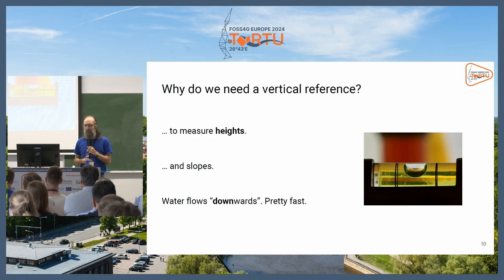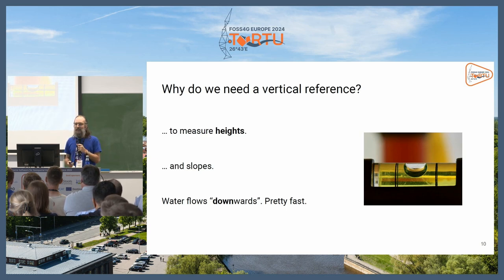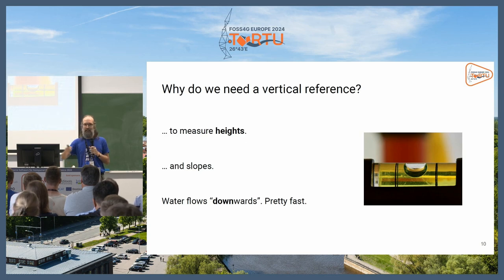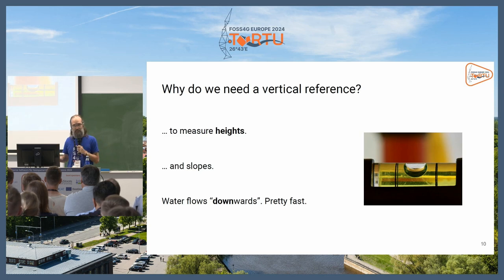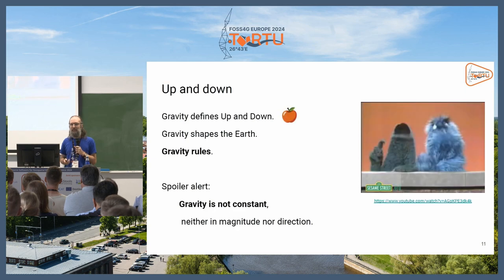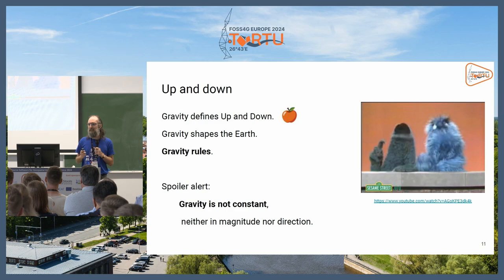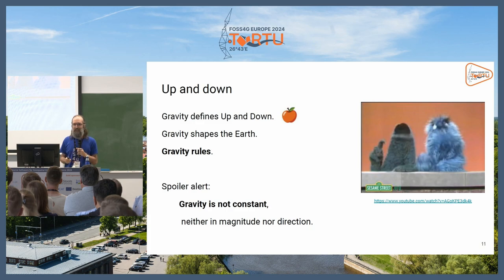After this brief history: why do we need a vertical reference? Easy answer — to measure heights. With heights we can compute slopes, and we know that water flows downwards. So what's up and down? Gravity defines the direction of up and down, and gravity shapes the earth — gravity rules. And spoiler alert: gravity is not constant, neither in magnitude nor in direction.